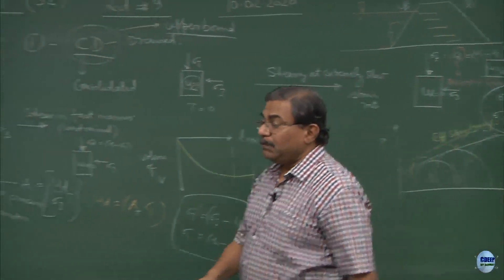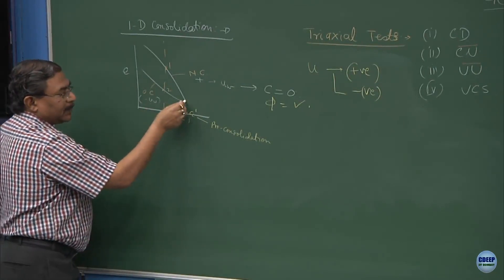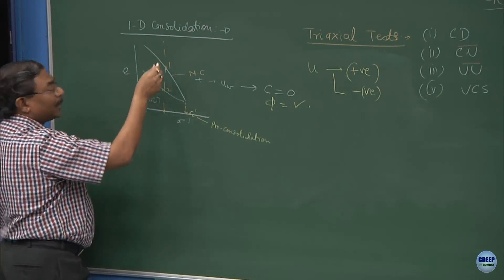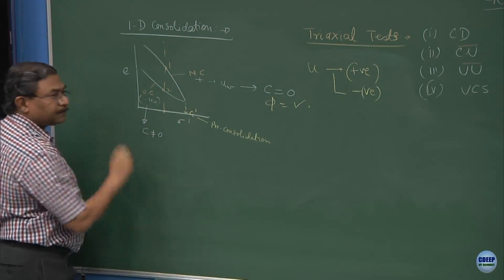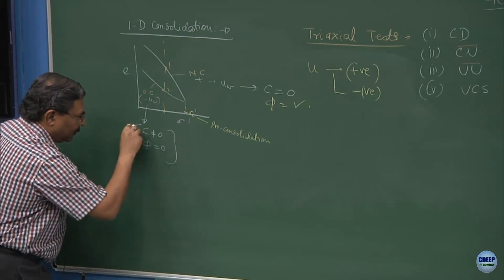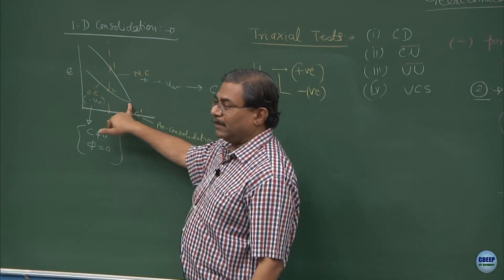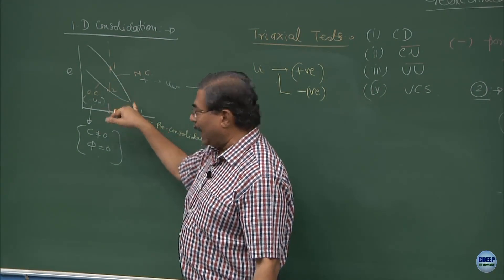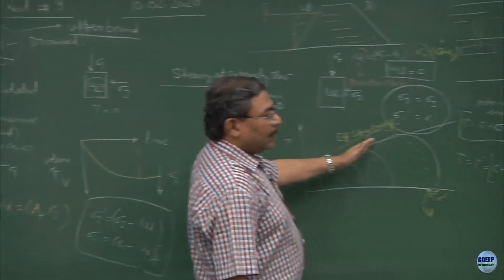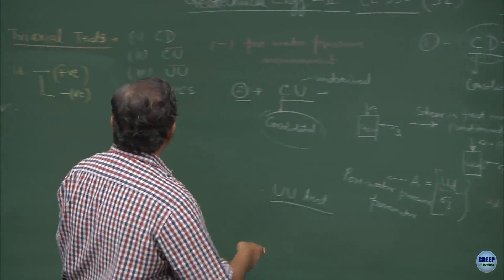However, the OC materials are the tricky systems. They do not sit silent. The moment you have loaded a system up to this point and you do unloading, the chances are the failures will occur because of the negative pore pressures. By virtue of this, these type of materials will show you C not equal to 0 and phi equal to 0. The material is same. What has created the distinction is pre-consolidation pressure.